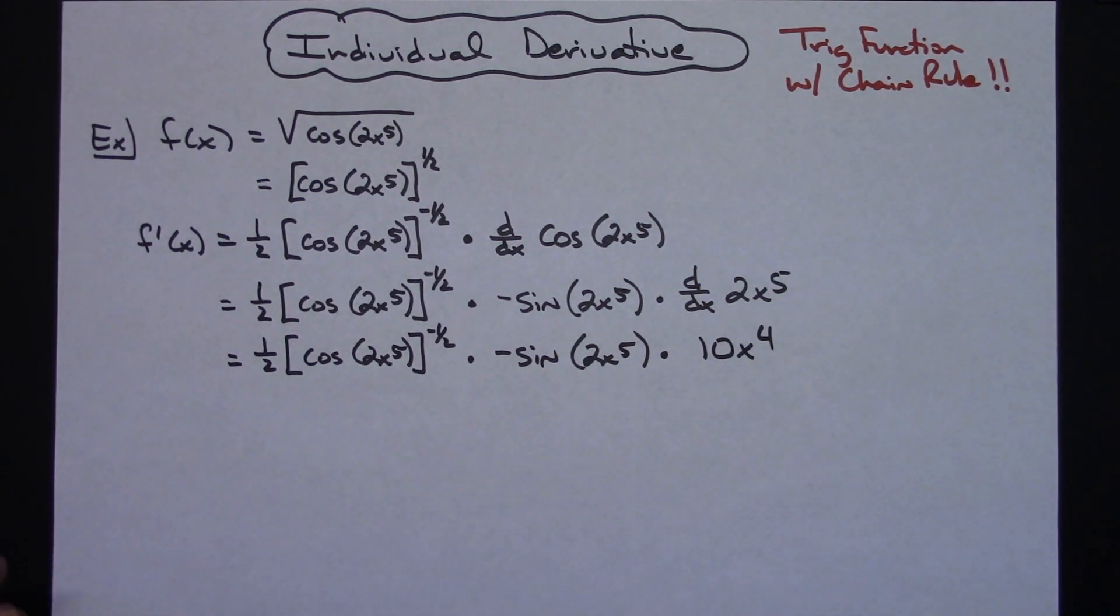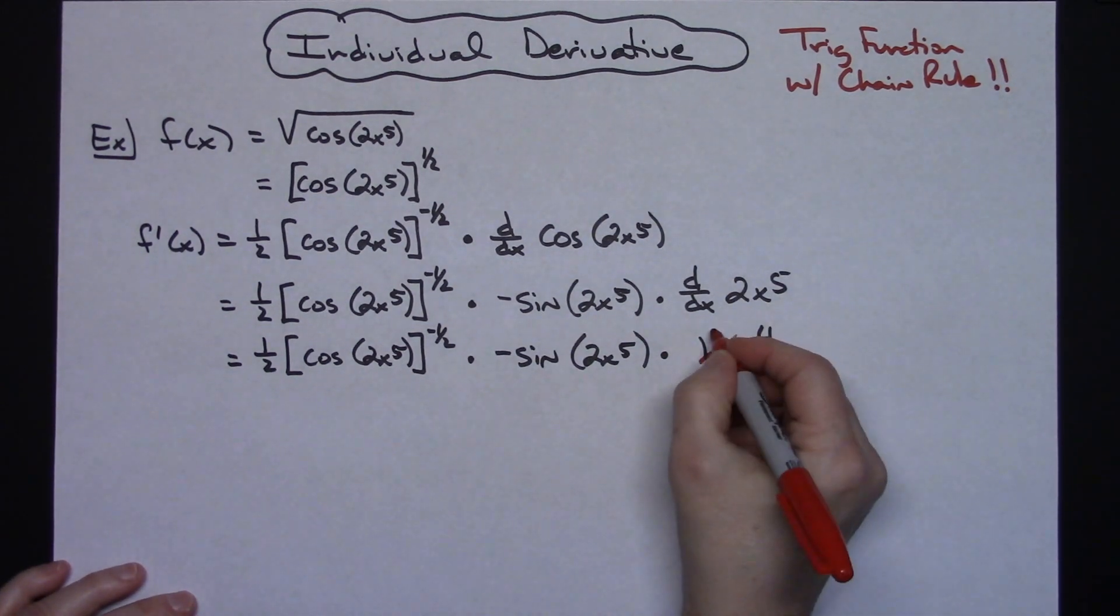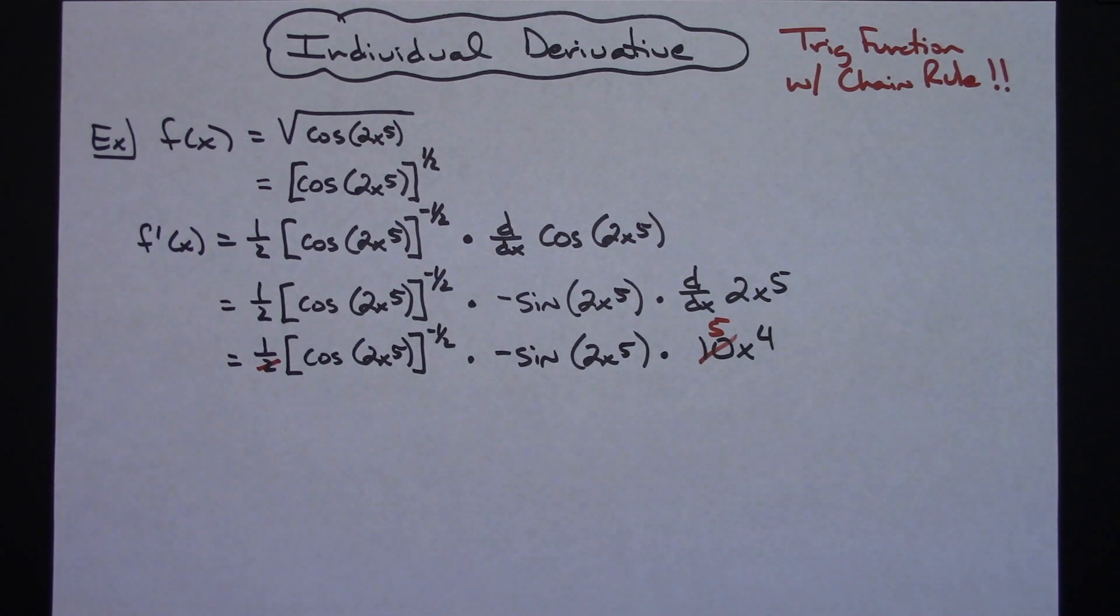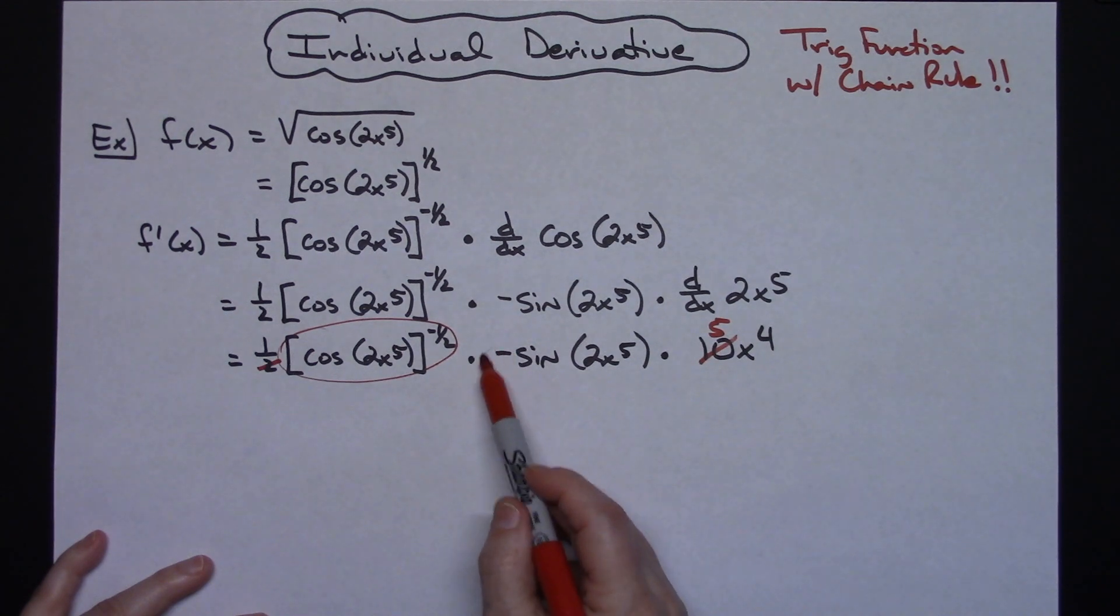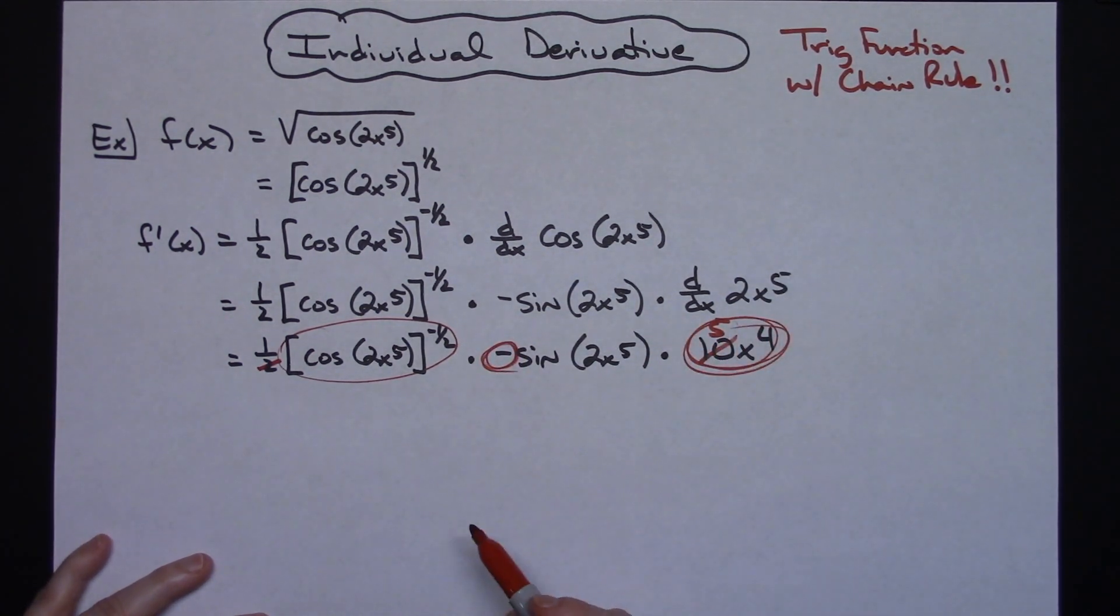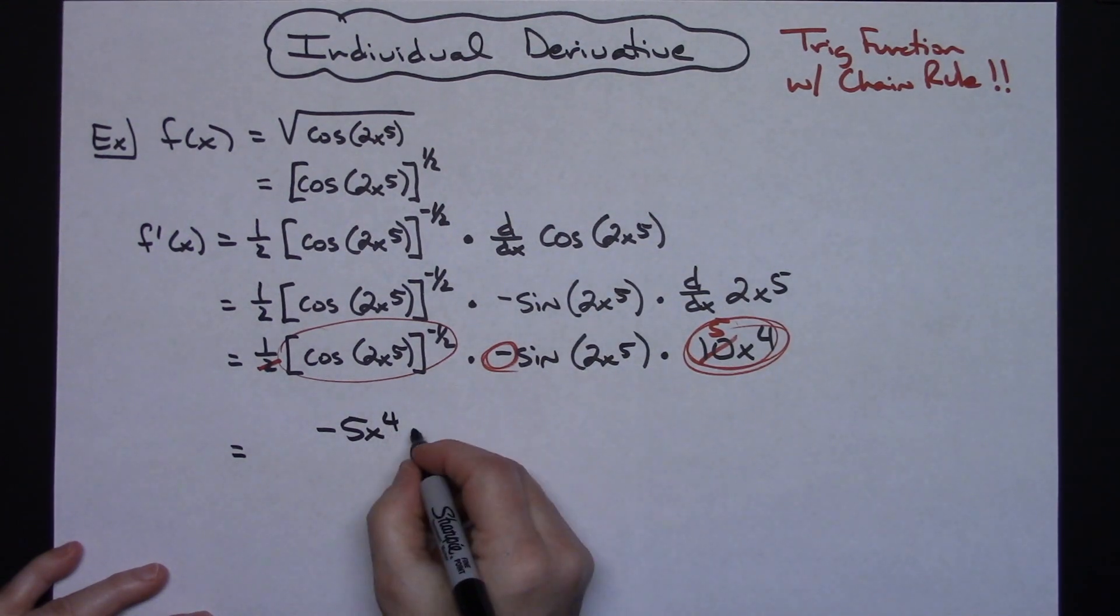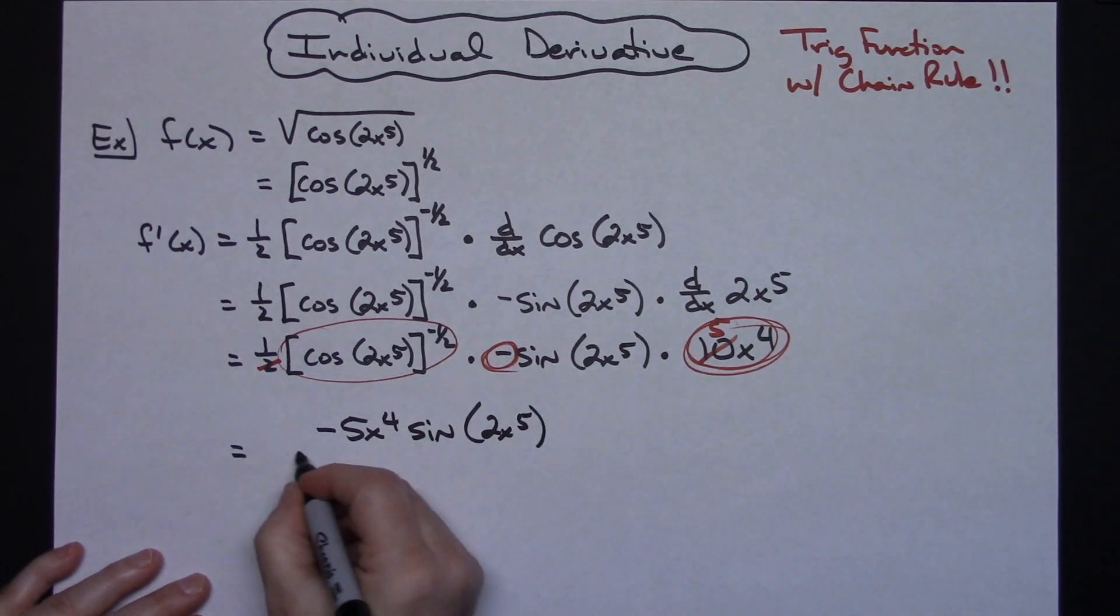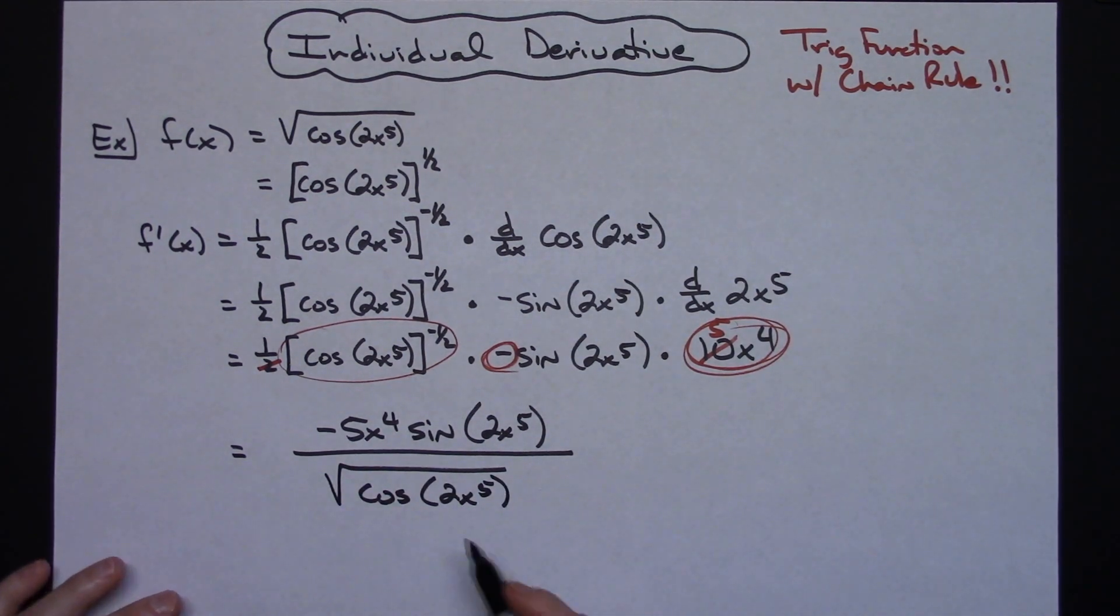Now before I start simplifying and putting this together here, let's take care of the fact that this is a 1 half right here, so that 2 is in the bottom, this 10 is in the top. Let's go ahead and reduce that so that I just have a 5 there. Now obviously this is going to go to the denominator because it has a negative 1 half power, and when I do that I'll put it back in radical form. The negative right there and the 5x to the fourth I'm going to pull out in front of that sine. So I'm going to have negative 5x to the fourth in front of the sine 2x to the fifth. Moving this down, making the exponent positive and turning that back into a radical, I'm going to have the square root of cosine of 2x to the fifth. Final answer there.